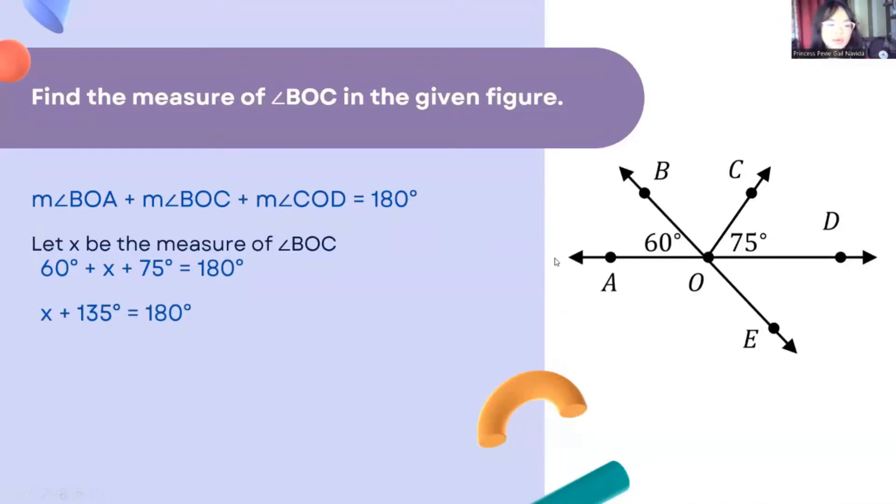Then add up the two angle measurements, which is 75 and 60. That will be 135 degrees. And then the number sentence will be X plus 135 degrees is equal to 180 degrees. Subtract 135 degrees from both sides so that you can isolate the X on the left side. So X is equal to 45 degrees, and the measure of angle BOC is 45 degrees.